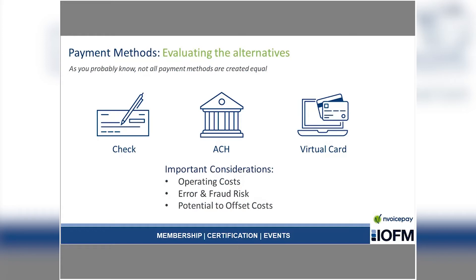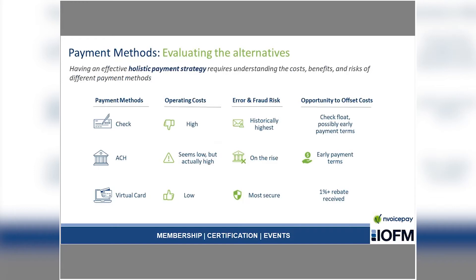What are the considerations among these payment methods? I've listed three things to drill deeper into: operating costs, error and fraud risk, and the potential to offset costs. Having a holistic payment strategy is really about understanding these three factors along with supplier preferences. Check has very high operating costs — everyone wants to move off them but hasn't been able to. Check historically has the highest potential for error and fraud, about 10 times more fraud than any other payment method. Opportunities to offset check costs include early payment terms, though suppliers who receive early payment terms want cash sooner than they'll receive the check. There's also significant value in check float — Treasury departments depend on that working capital from you paying by check.